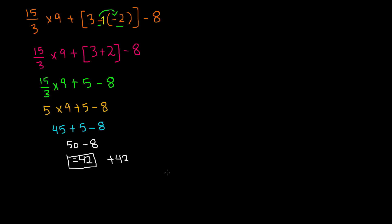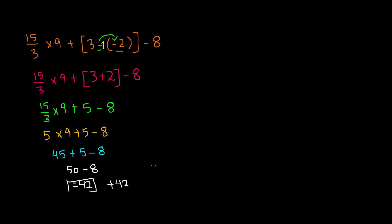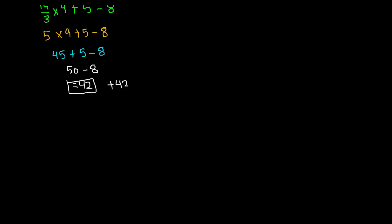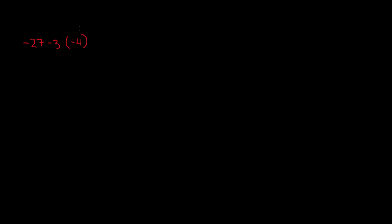So this is how you solve an equation using the PEMDAS method, or the order of operations. Let's go ahead and do another example. This time, let's say that we have negative 27, minus 3, and then in parentheses we have negative 4, and then we close the parentheses, and then we have squared, and then we have plus 11.